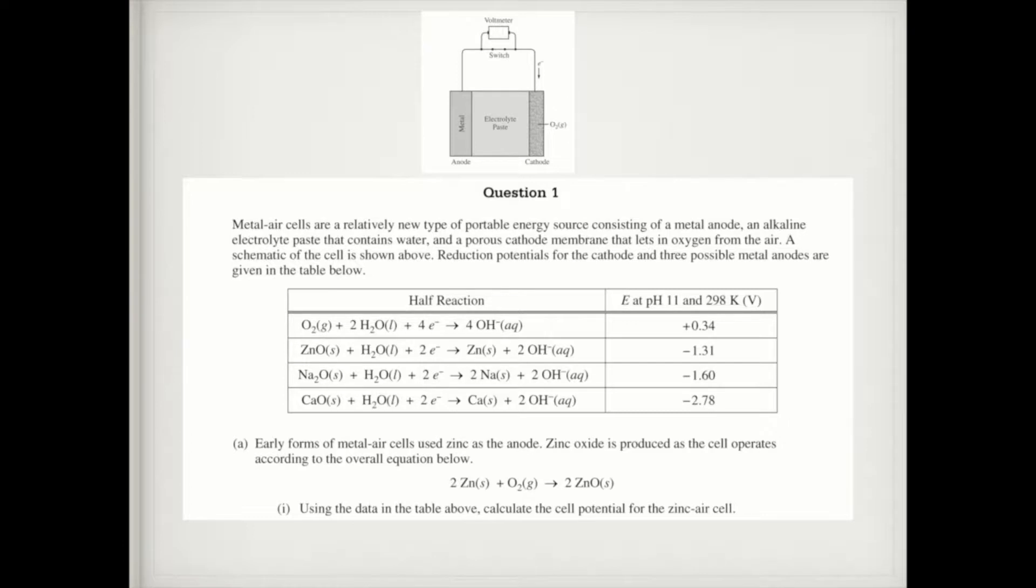In part A, it says early forms of metal air cells used zinc as the anode. Zinc oxide is produced as the cell operates according to the overall equation below. Using the data in the data table above, calculate the cell potential for the zinc air cell.